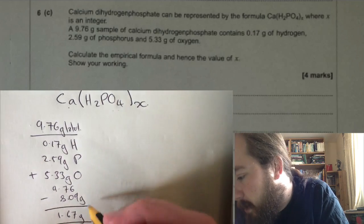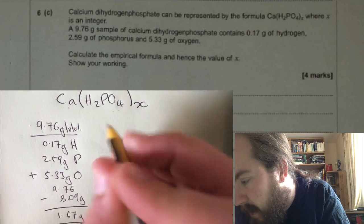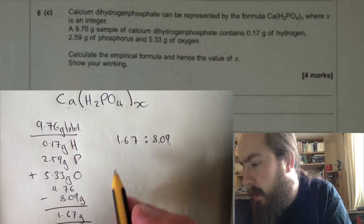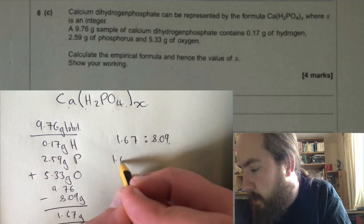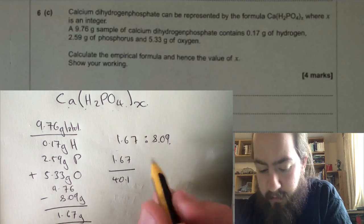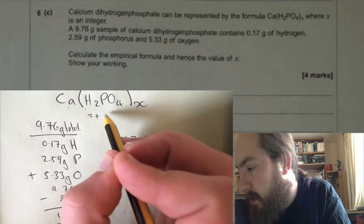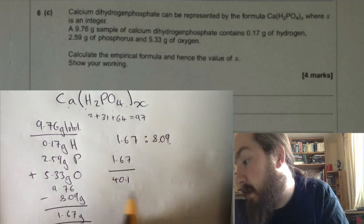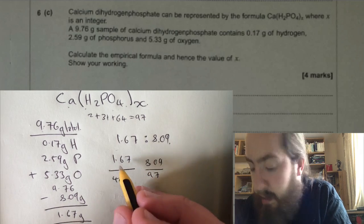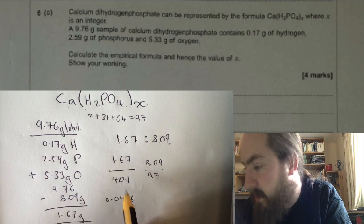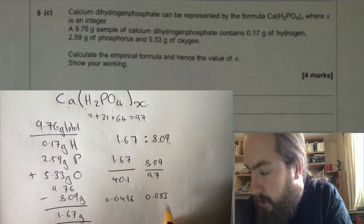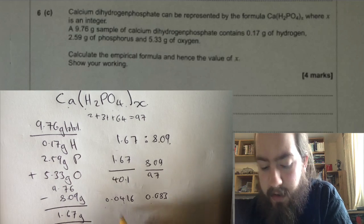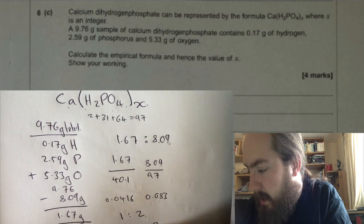Now the way I work this out is that I know we've got 1.67 of calcium for every 8.09 of the hydrogen phosphate. So I then divide those by the molecular masses: 1.67 divided by 40.1 for calcium. I worked out that when you have the two hydrogens plus the phosphorus plus the four oxygens, you're going to get a molecular mass, or ionic mass in this case, of 97. So I divided the 8.09 by 97 as well, and this gave me 0.0416 for the calcium and 0.083 for the hydrogen phosphate. You can almost see with the naked eye, but you can use the calculator to work out this is a ratio of 1 to 2. So we've worked out now that x equals 2.